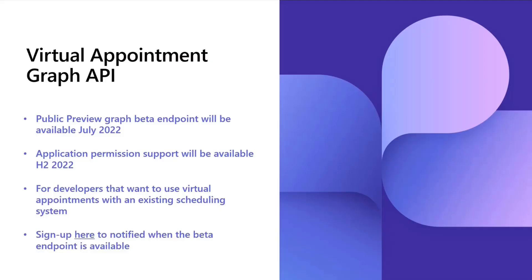Where we are right now: the public preview for Graph — the beta endpoint — will be available pretty soon in a few weeks in July 2022. Application permission support is something we've heard from a lot of partners and ISVs; that's coming in the second half of 2022. Delegated permissions are supported in the public preview, and application permissions will fast-follow. This is for developers who want to use virtual appointments with an existing scheduling system and get all the B2C functionality. The beta endpoint will be available in the next few weeks.